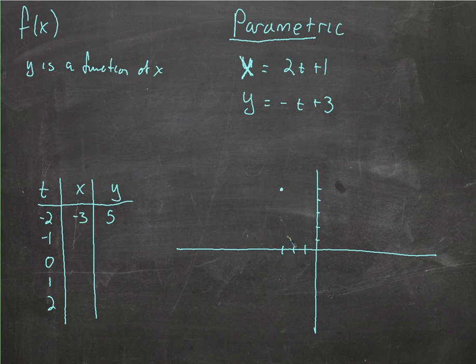And there is the first point, and we have enough points, and it starts to look like a certain shape. So negative 1 times 2 is negative 2 plus 1, that's negative 1. Negative 1 in here, that's positive 1 plus 3 is 4. So we have another point, negative 1, 4.